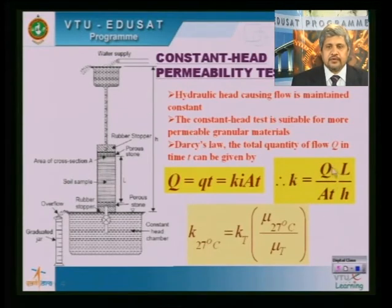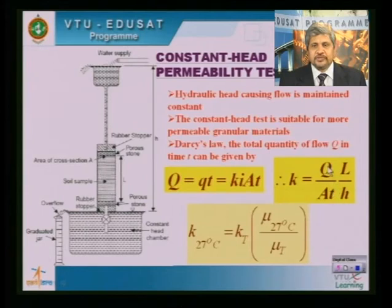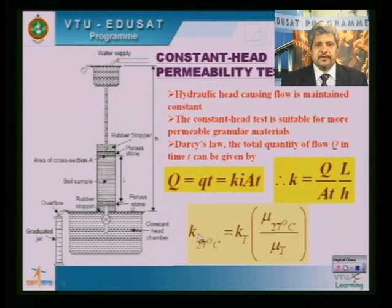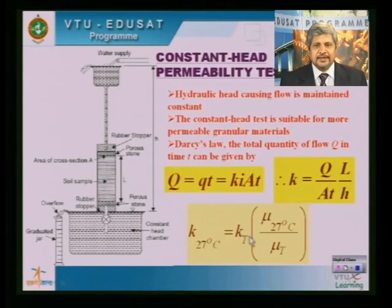You substitute directly: A is the cross-sectional area of the soil specimen, which is the cross-sectional area of the permeability mould; T is the time interval over which Q is collected; L is the length of the sample; and H is the hydraulic head maintained constant from the top water level to the outlet of the permeameter, so L/H gives the hydraulic gradient. K is usually expressed at 20°C, obtained by multiplying the ratio of water viscosity at 27°C to the laboratory temperature by K_T — the permeability value at laboratory temperature — to convert it to 20°C.